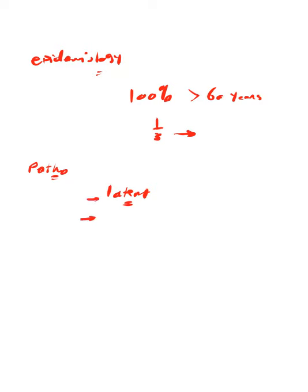Is the primary site necessarily the same site of recurrence? If I have a primary nerve affected, for example the maxillary nerve, is it necessary that the recurrent disease affects the maxillary nerve dermatome? No — the site of recurrence isn't necessarily the same as the primary site. This is important and may be asked in MCQ.